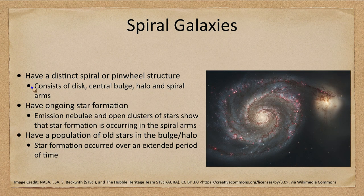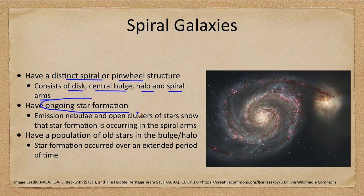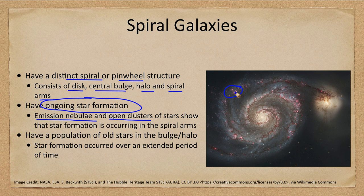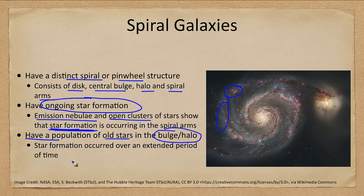Spiral galaxies have a very distinct spiral or pinwheel-type structure. Like our galaxy, they consist of a disk, a central bulge, a halo, and spiral arms. These galaxies have ongoing star formation, with emission nebulae and open clusters of stars. We can see the pink color of hydrogen regions and the bluish color of the spiral arms, showing that stars are currently forming. They also have a population of old stars in the bulge and halo.